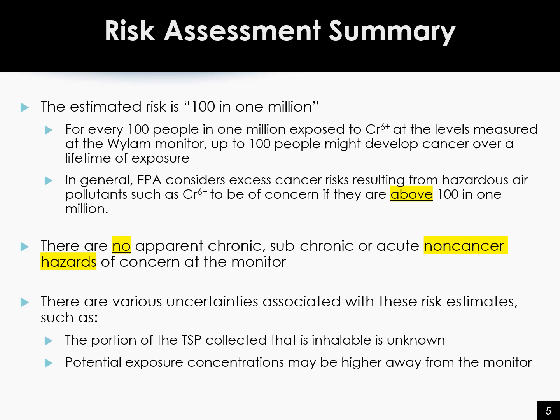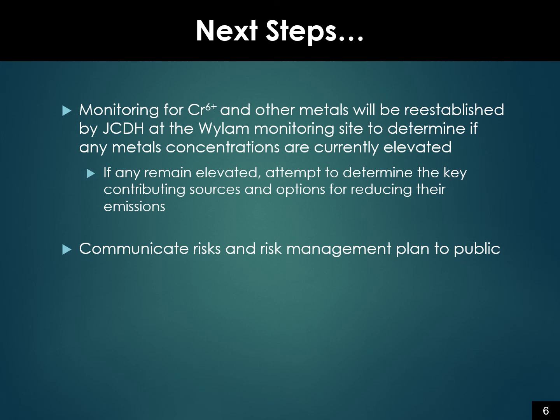To help ensure that air quality in the Wilhelm neighborhood remains safe, JCDH is in the process of reinstalling the special equipment at the Wilhelm monitoring site to collect additional samples for hexavalent chromium and other metals. The plan is to start with collecting six months of samples to see if hexavalent chromium and other metal levels are the same or decreasing. Depending on the circumstances, additional samples may be taken. If concentrations have increased, an attempt will be made to determine the primary contributors to the measured values, and then to look for options to reduce emissions and improve air quality.